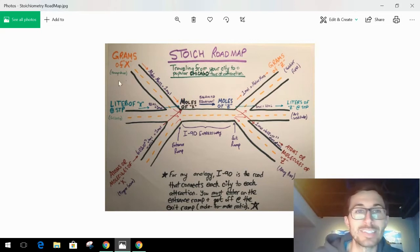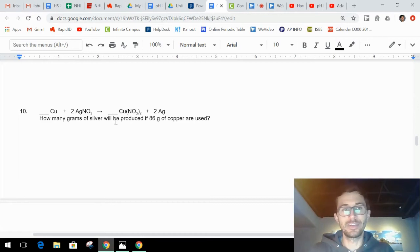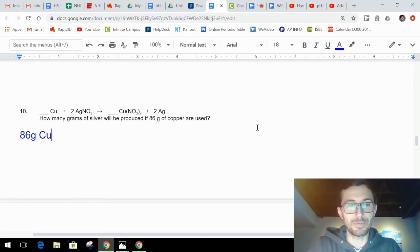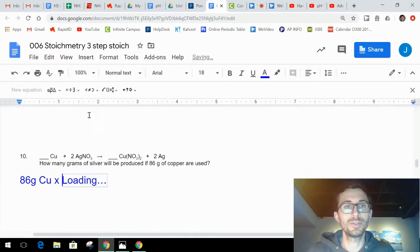That's a shortcut you can't do. The only way to get from Hampshire to Soldier Field is to go through this road, go on to I-90, and then take the exit to go to Soldier Field. You can't just go straight to Soldier Field because there's no road connecting it. So you need to follow this. If you don't follow your roadmap you're going to get lost. I'm going to start off with 86 grams of copper.